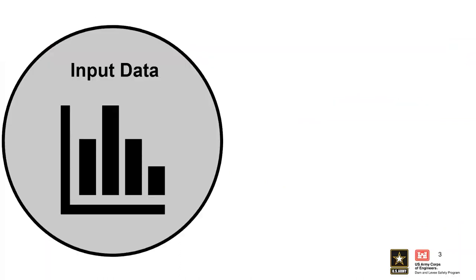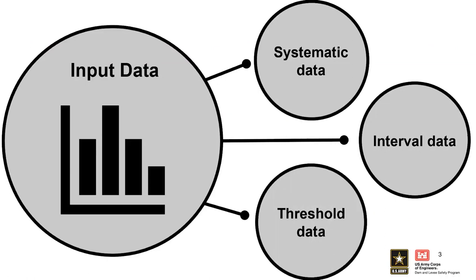RMC Best Fit currently supports three different data types: systematic data, interval data, and perception thresholds or threshold data. Within the current version of Best Fit, input data is required to be a block annual maximum, and it's assumed to be independent and identically distributed. That means a flood event that occurs in year one won't impact a flood the following year, and so all the events are independent. All the systematic data entered in RMC Best Fit is going to be an irregular annual value — it's not occurring exactly one year apart. It's irregular because you might have a flood in April 2020, May 2021, that sort of thing, and it'll all be representative of the critical inflow volume duration.